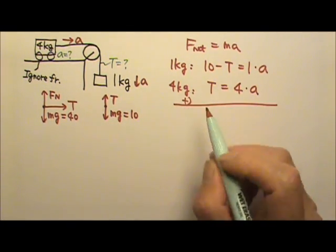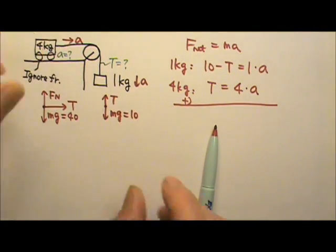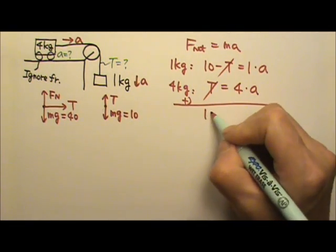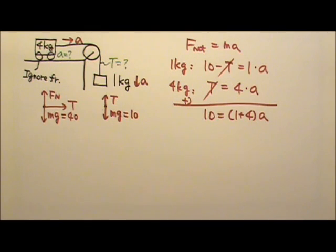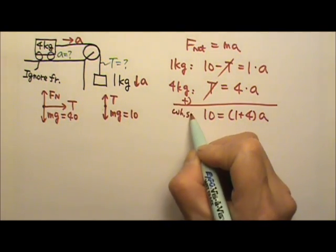Again, the tension is the internal force. The tension is the force between those two boxes. The internal force would cancel. So you get 10 equals to 1 plus 4 A. And this is the force equation for the whole system.